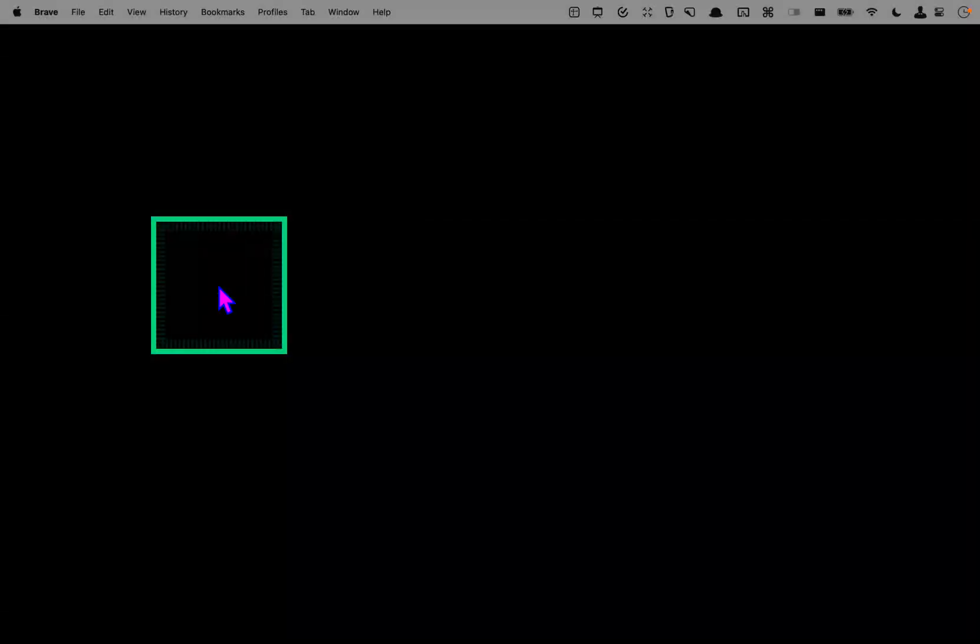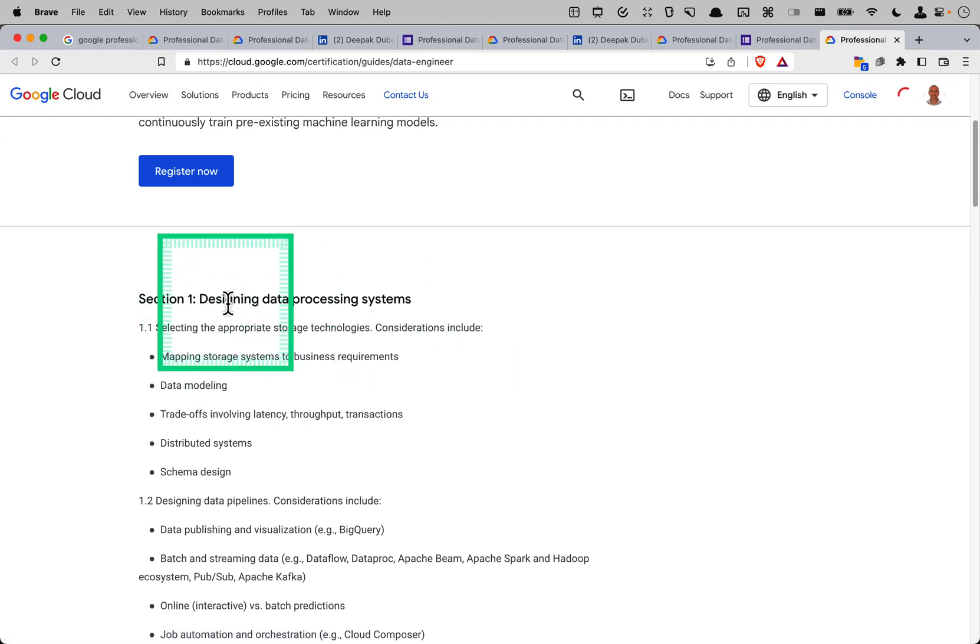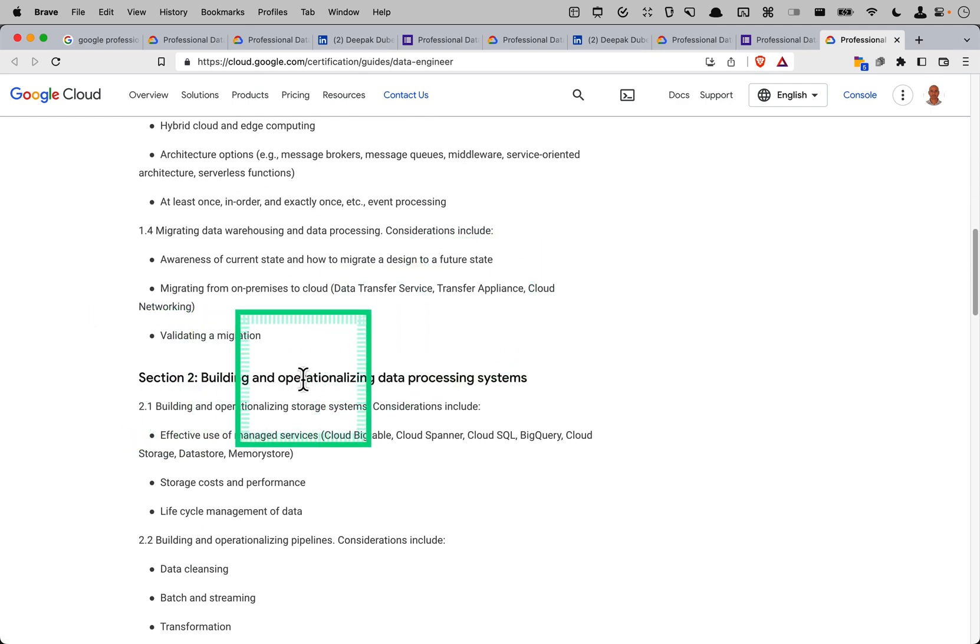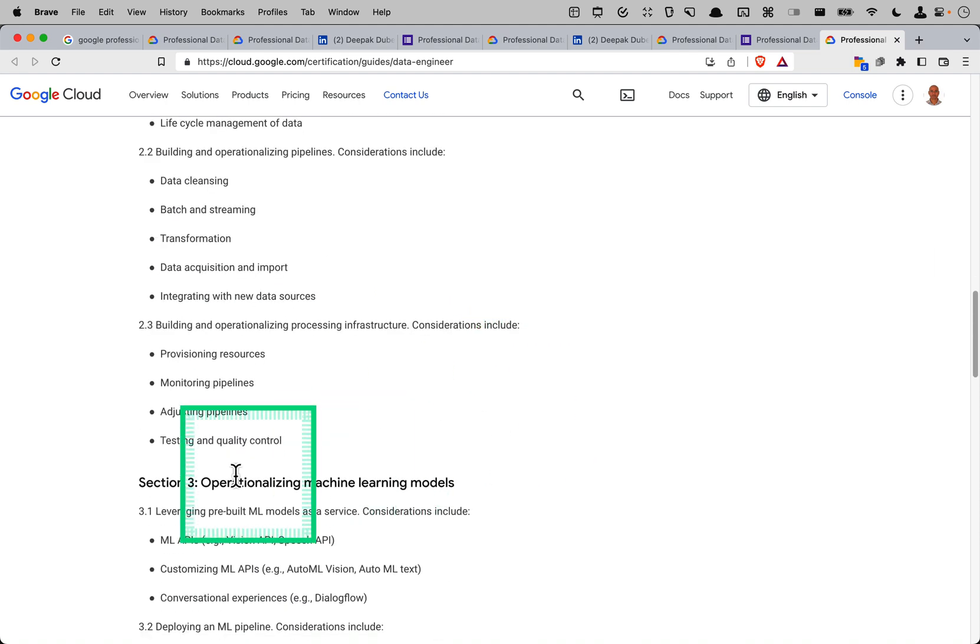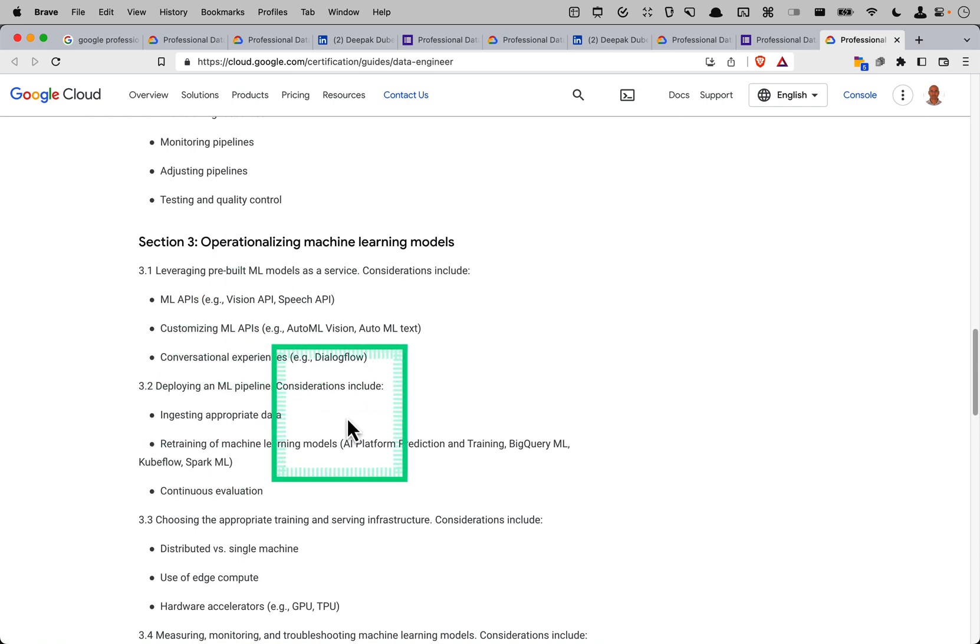Next is the exam guide. The exam guide talks about all four sections: section one is designing data processing systems, section two is building and operationalizing data processing systems, section three is operationalizing machine learning models. Machine learning is a whole section. If there are four sections, we can roughly say it will be around 24 to 25 percent. And section four is ensuring solution quality.